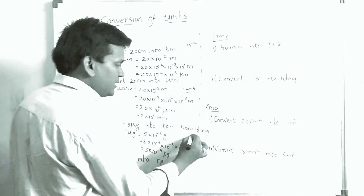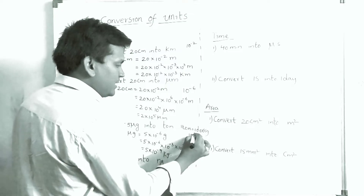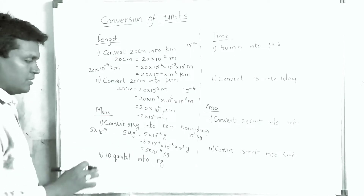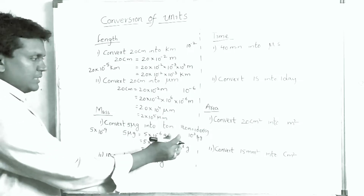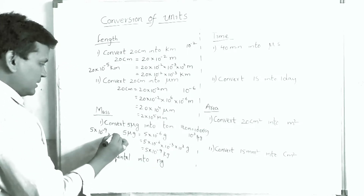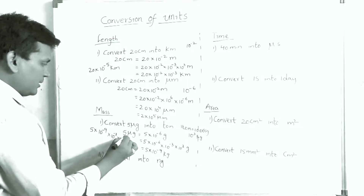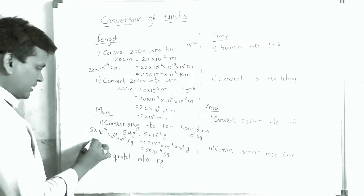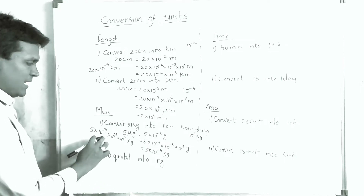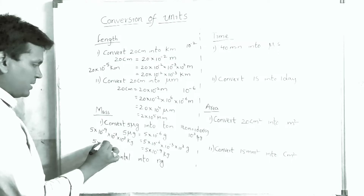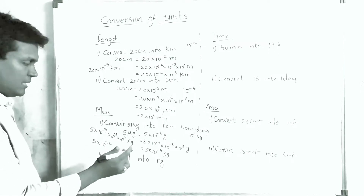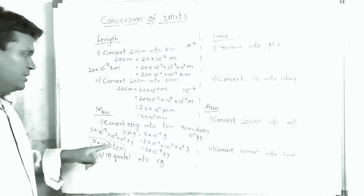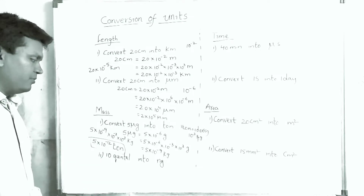Adding powers: minus 9 plus minus 3 gives minus 12. And 10³ kg is nothing but 1 ton. So 5 × 10⁻¹² tons. That means 5 micrograms equals 5 × 10⁻¹² tons.